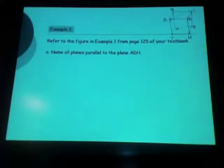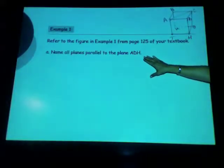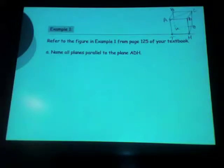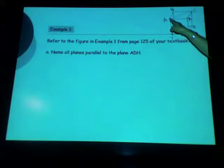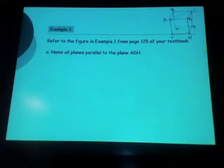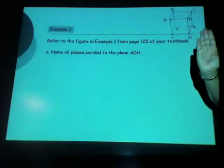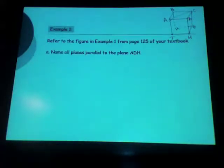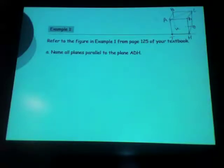Based upon that figure, the first question is to name all the planes that are parallel to plane ADH. Remember that planes are named with three letters only — no notation in front or above. Find ADH and trace it with your fingers — that belongs to the front face. On a box, what is parallel to the front face? The back. So which plane represents the back? B-K-G-C — but you can only use three of those four letters. You could name it BCG, BKG, or CGK. That's the only plane parallel to this front face.